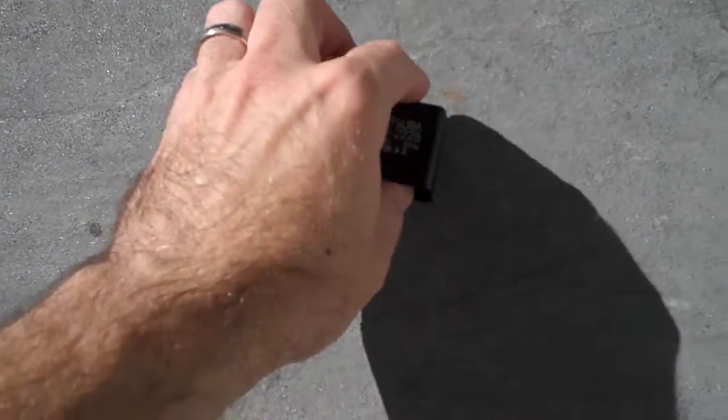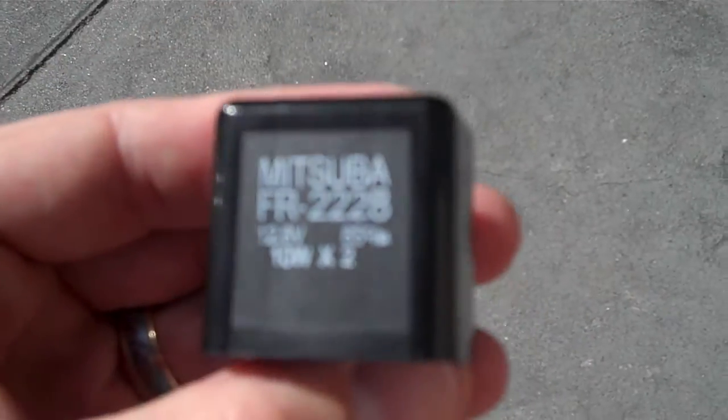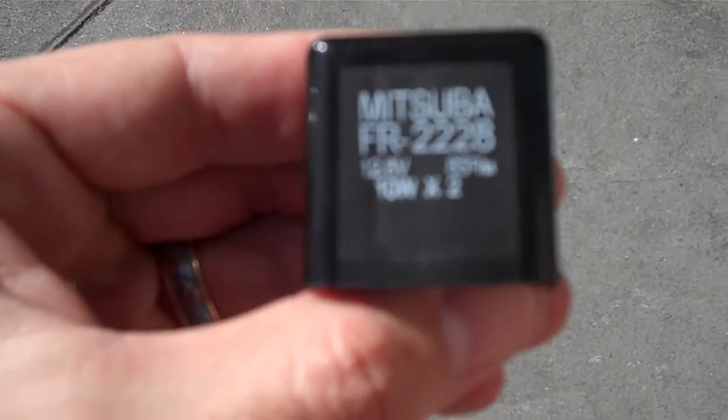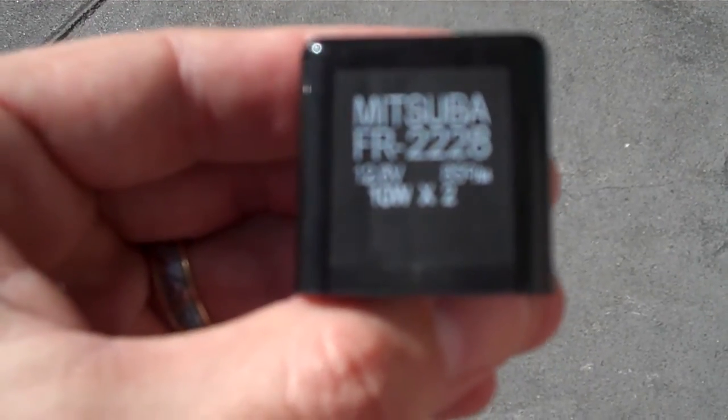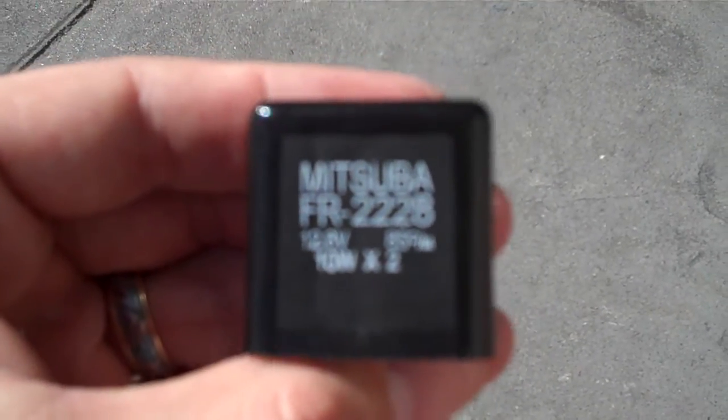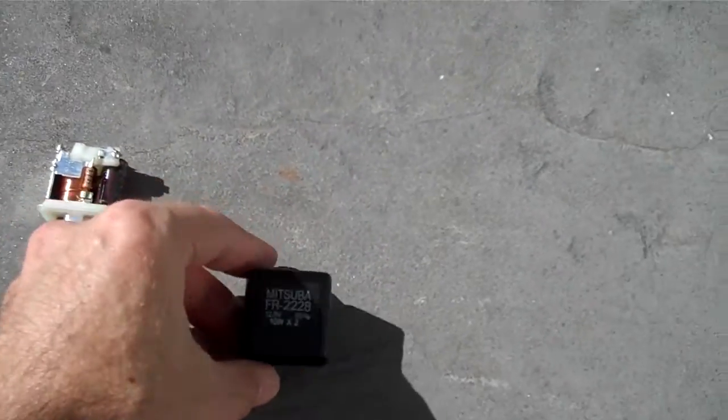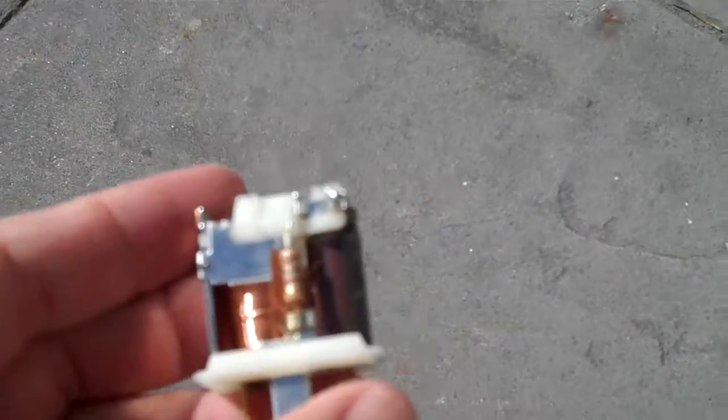Hey guys, I just wanted to show you inside this Mituba FR2228 flasher. This is the flasher that comes on the Kawasaki Ninja 300.